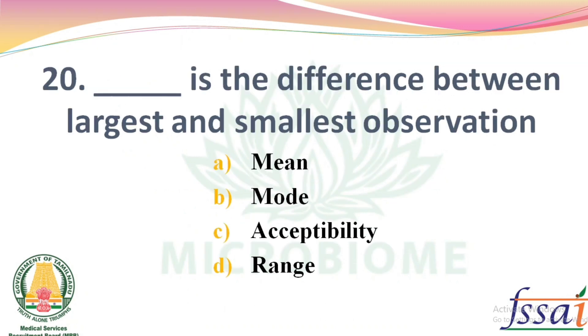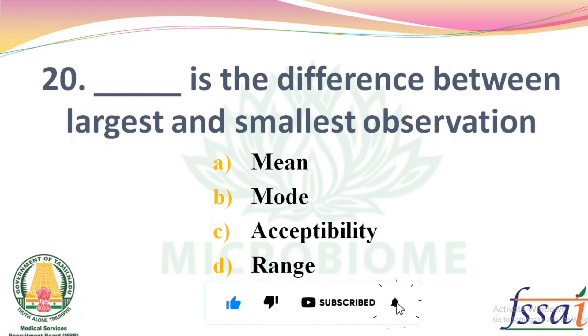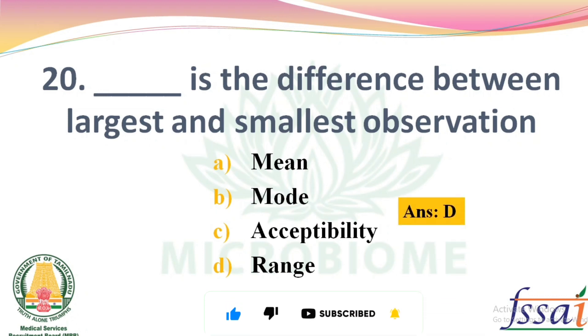Dash is the difference between the largest and smallest observation. Options: Mean, Mode, Acceptability, Range. The right answer: Option D, Range.